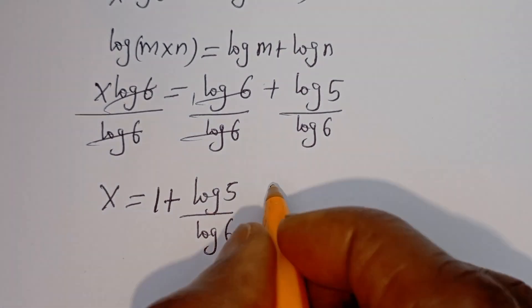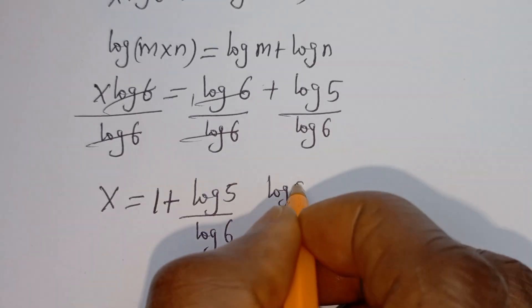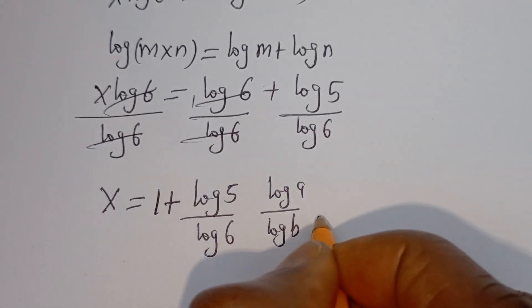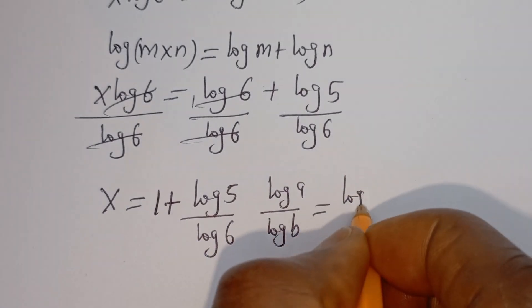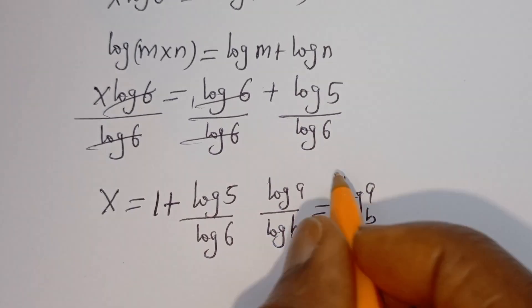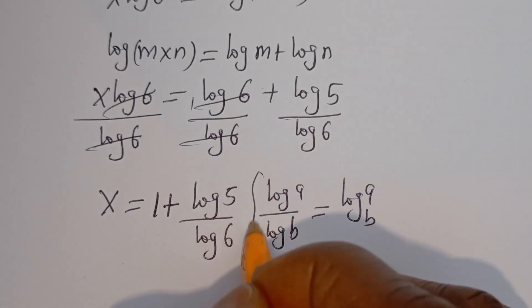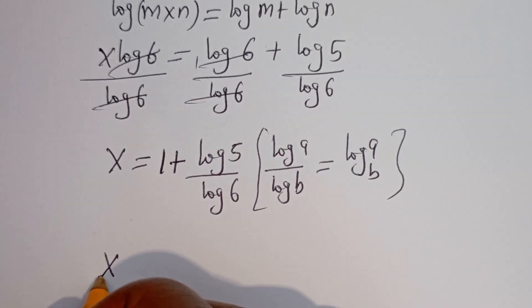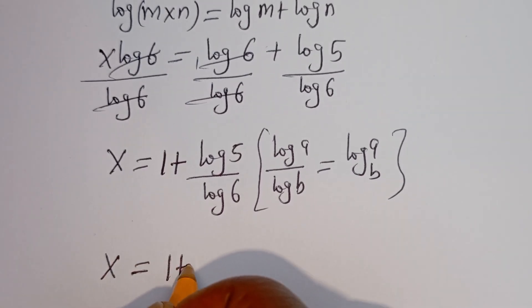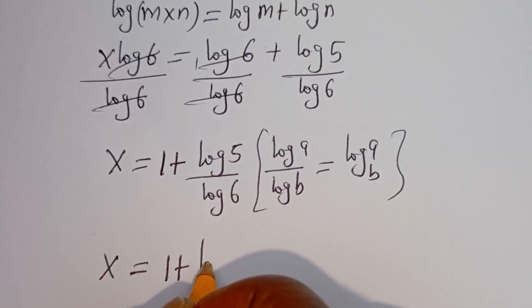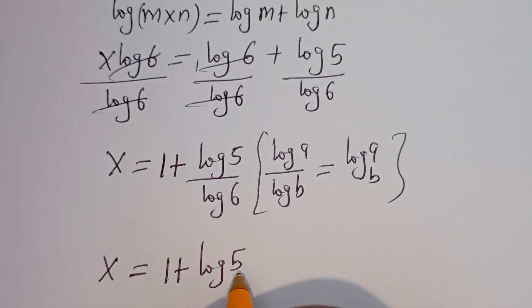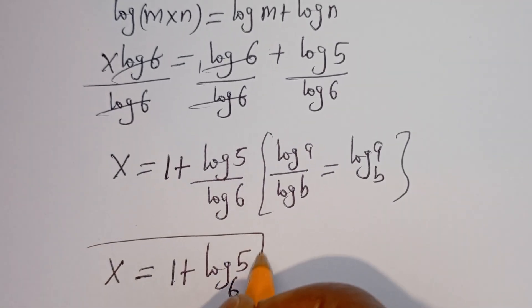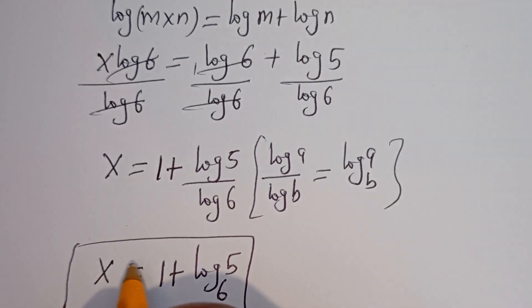Take note that log A over log B equals log A base B. Therefore, this can be written as x equals 1 plus log 5 base 6. And this is the final answer.